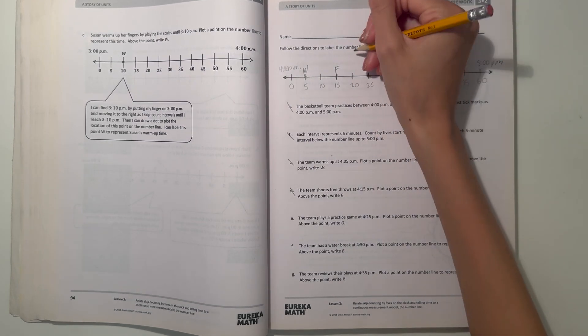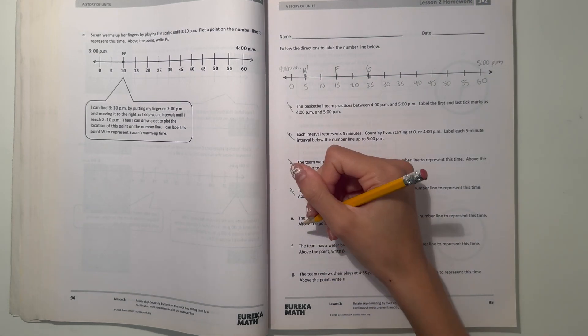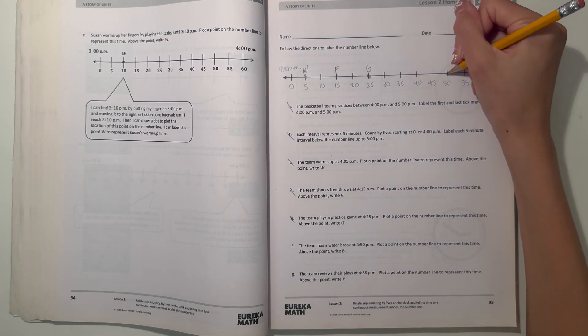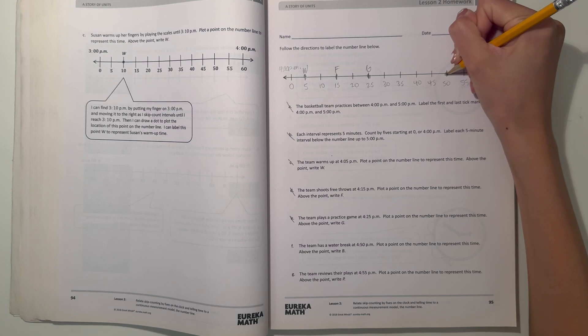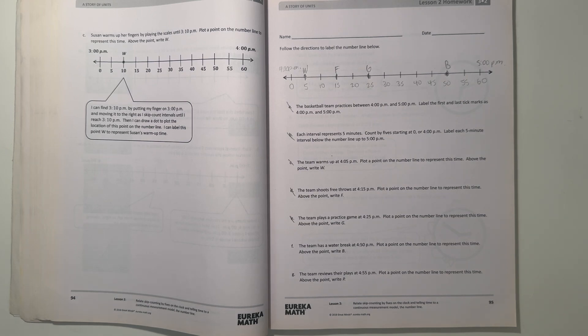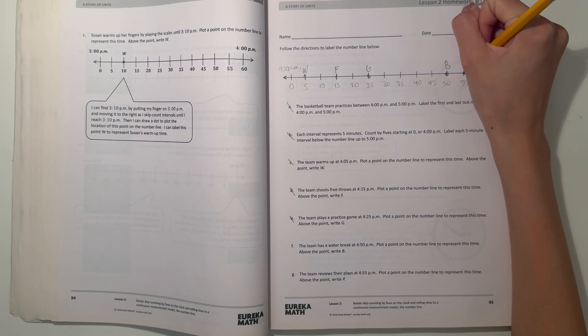And now, the team has a water break at 4:50. So 50 is over here, so let's plot a point and then above it write B for water break. All right, and now the team reviews their plays at 4:55, right here. So plot a point there and write P because they're reviewing their plays.